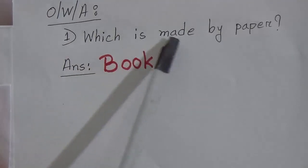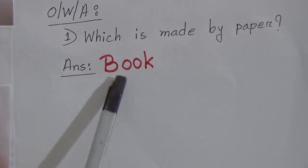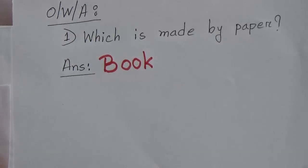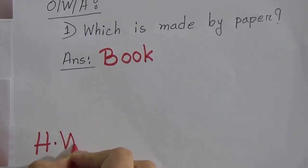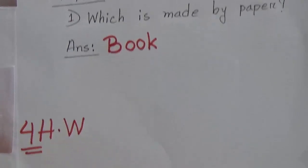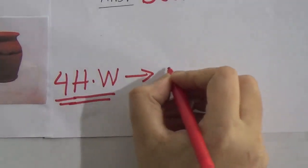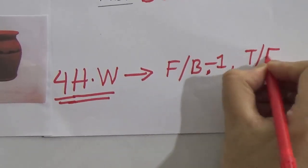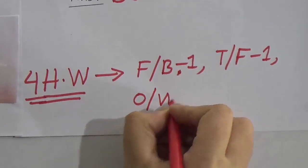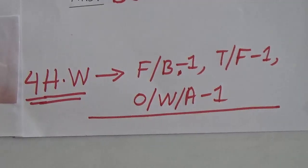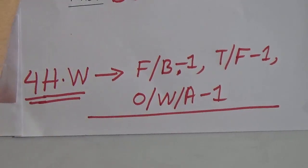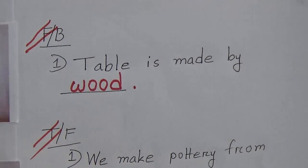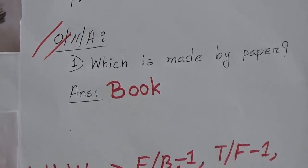Say with me: which is made by paper? The answer will be 'book' — B, double-O, K — book. Now dear students, you have to do some SW. Your SW number is four. When you do your SW, write the number four SW at the top of your copy. Your SW will be: one fill in the blanks, one true/false, and one one-word answer. This is your fourth SW.